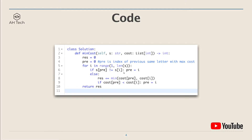The code is pretty short and concise. First, we declare two variables: res and pre, where pre is the index of the previous same letter with the maximum cost. Then we go through the array. If the current letter is not repeated, we set pre to the current index.